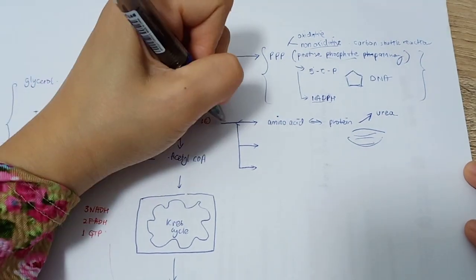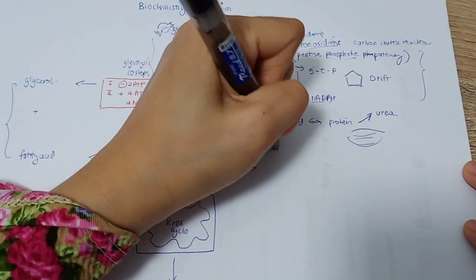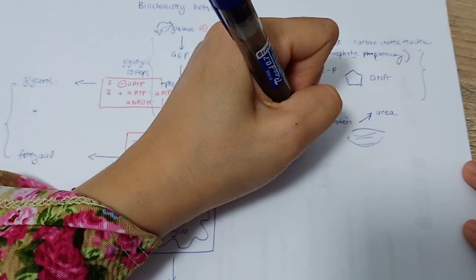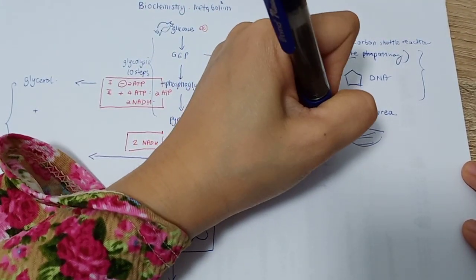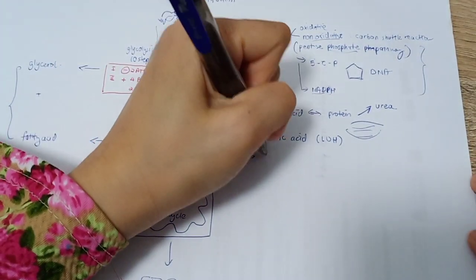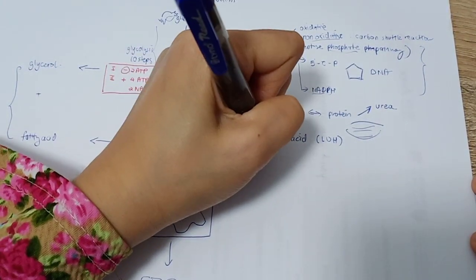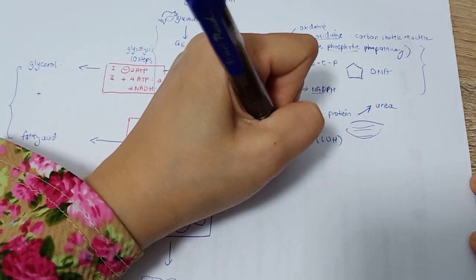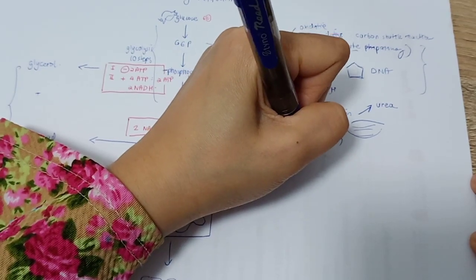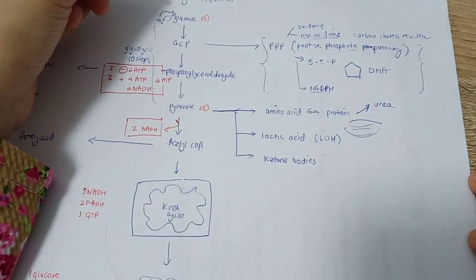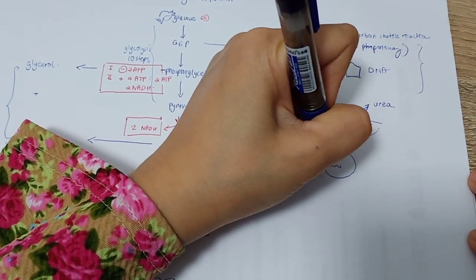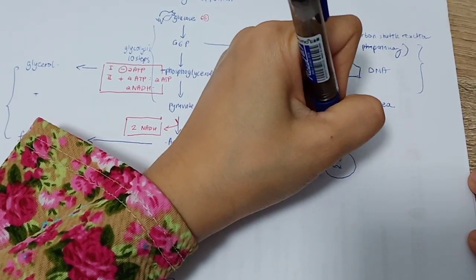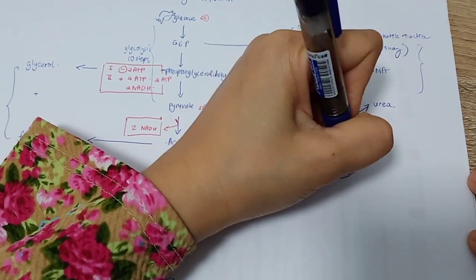At the same time, pyruvate can also form lactic acid with the help of LDH, which is lactate dehydrogenase enzyme. Also, it can go into ketone bodies in case of starvation because ketone bodies and glucose are the only forms of energy that can be consumed by the brain.